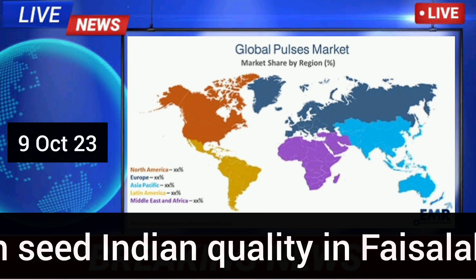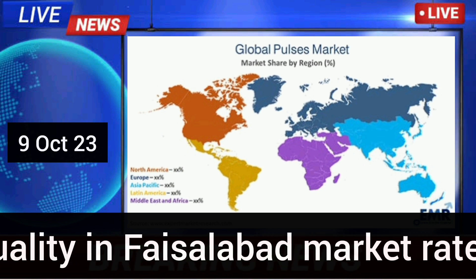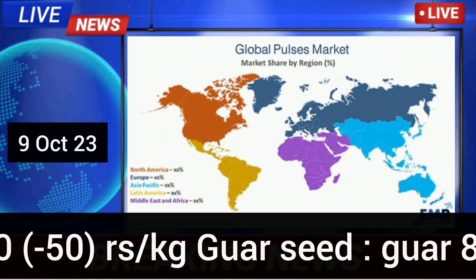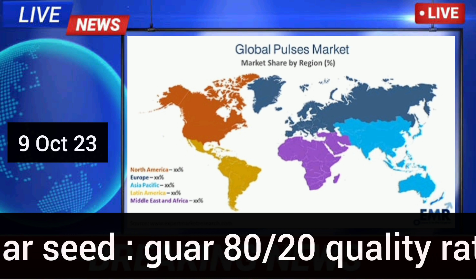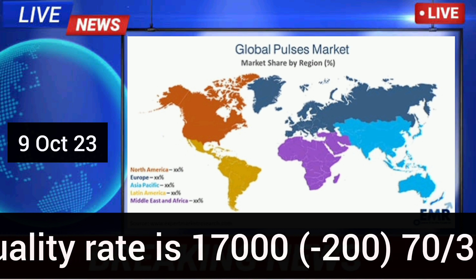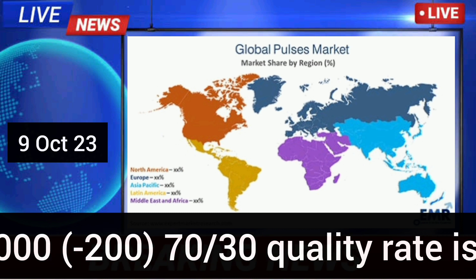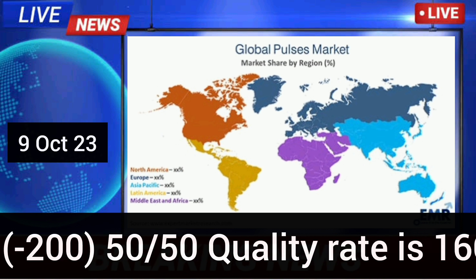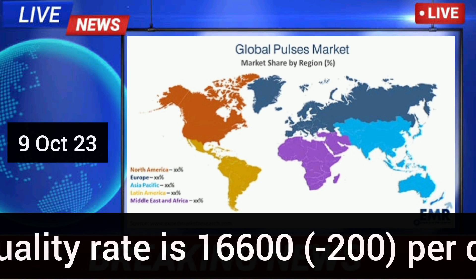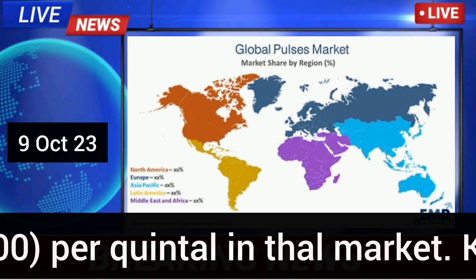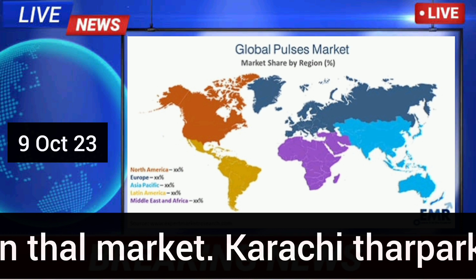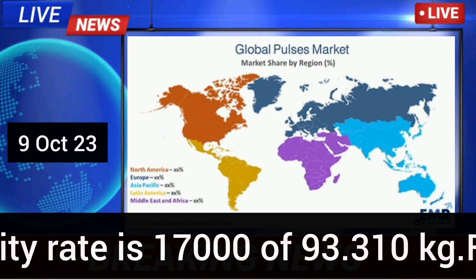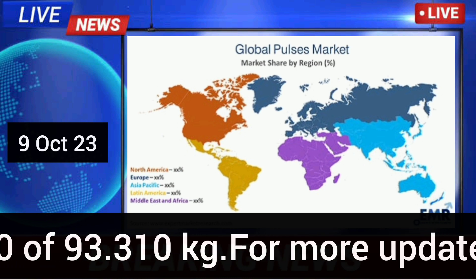Cumin seed Indian quality in Faisalabad market rate is 2,500 rupees per kg. Jowar seed in Thal market: 80×20 quality rate is 17,000 Rs., 70×30 quality rate is 16,800 Rs., 50×50 quality rate is 16,600 Rs. per quintal. Karachi Tharparkar quality rate is 17,000 rupees per 93.310 kg.